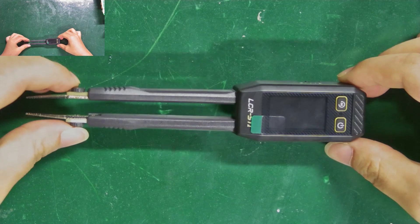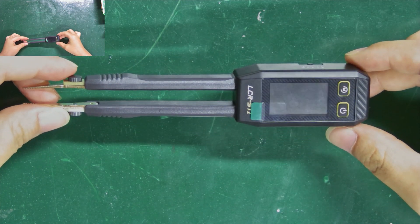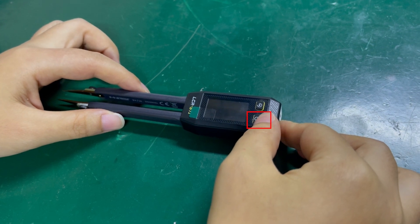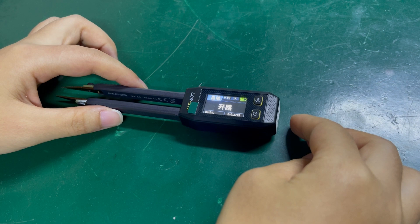Now, I'll start explaining its function keys and usage methods to you. This is the power button. A quick press will turn it on, and a long press will turn it off.